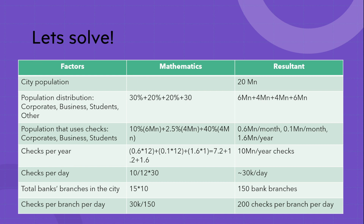Let's dive into the answer. First, let us assume the city population is 20 million. The population is distributed accordingly: the first section is corporates, the second is medium and small businesses, then students who use checks to pay their fees, and then the other section of the population. These are in ratios of 30%, 20%, 20%, and 30% respectively. So corporates become 6 million, businesses 4 million, students 4 million, and others 6 million.